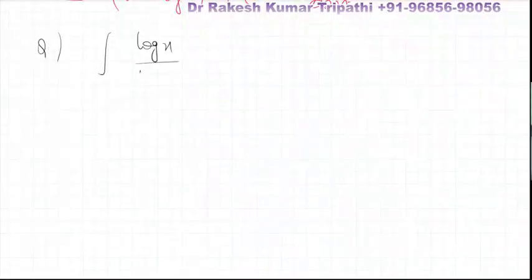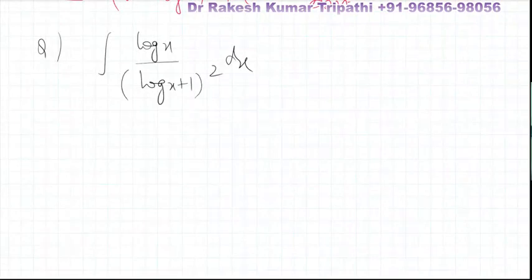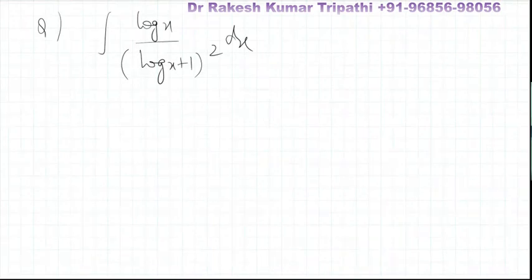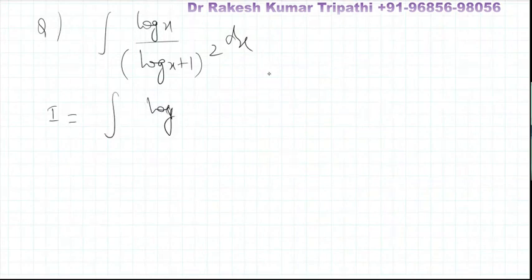This is a very popular integral: log(x) divided by (log(x) + 1) whole squared. There are two approaches — one is to put log(x) equal to t. If you don't wish to substitute, then you will use the concept of writing log(x) + 1 minus 1 in the numerator — that is, add one and subtract one.